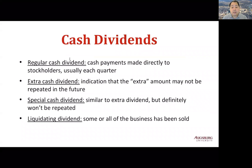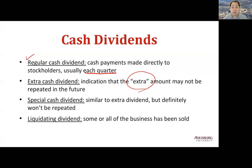The typical dividend is paid as a form of cash. Dividends that are regularly paid are called regular cash dividends. Cash payments will be made directly to stockholders, usually each quarter. Dividends that indicate an extra amount and may not be repeated in the future are called extra cash dividends. There is also a dividend similar to an extra dividend but definitely not repeated, called a special cash dividend.